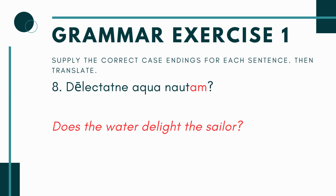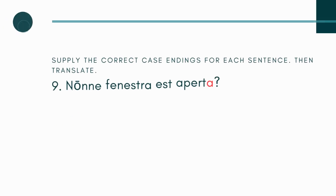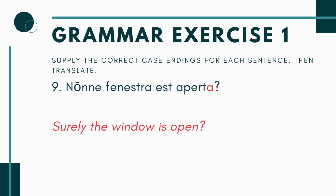Number eight introduces questions, which is part of the grammar for this chapter. The -ne on delectat means you're asking a yes or no question where you're not sure what the answer is. So you have delectatne aqua nautam. I have a subject, aqua, so if I rework this: the water delights something. Since it's a question, does the water delight? I need a direct object — nautam, the sailor. So you translate this as: does the water delight the sailor?